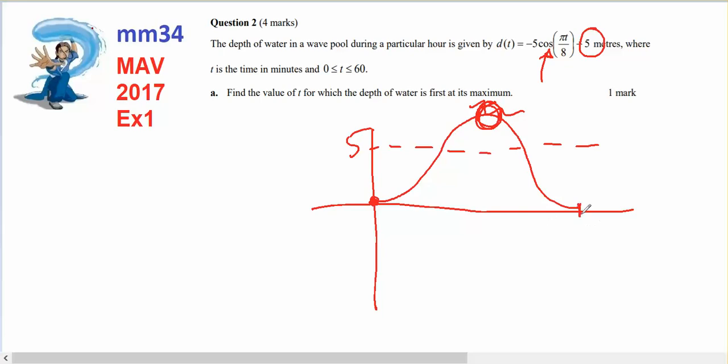If I consider the period in half, I'm going to find the time that it's at its first maximum. So 2π divided by π over 8, so the period equals 16. Therefore at 8, t equals 8, will be the first maximum.